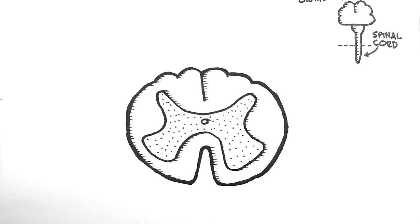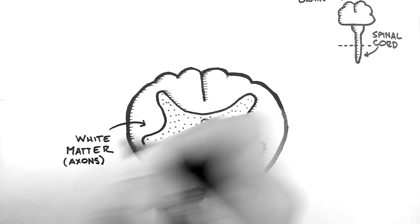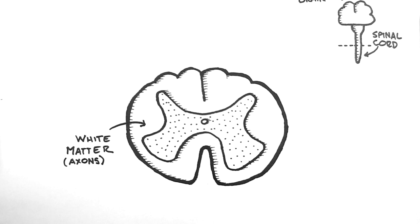The first thing you will notice about the spinal cord is that there are two well defined areas. The first is the white area around the outside, which we call white matter, and is comprised primarily of axons and the cells which support axons.